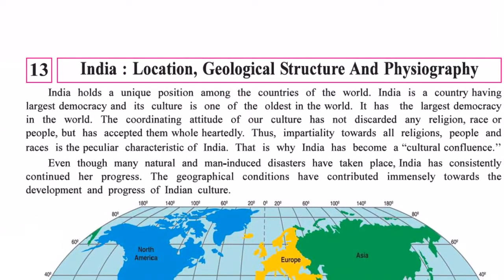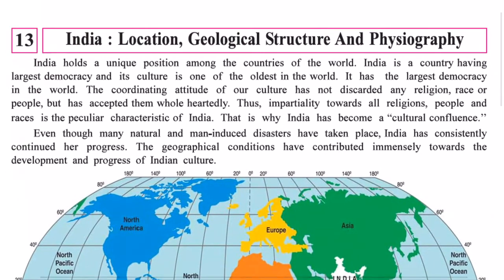India has a very unique position in the world. It is the largest democracy of the world, it is a multicultural nation, and it is the oldest in the world. It doesn't have any barriers of religion, races, or people — we have accepted everybody wholeheartedly. There is no impartiality towards religion, people, or any races, and this particular characteristic makes India unique and different from the rest of the world. That is why it is called the cultural confluence.